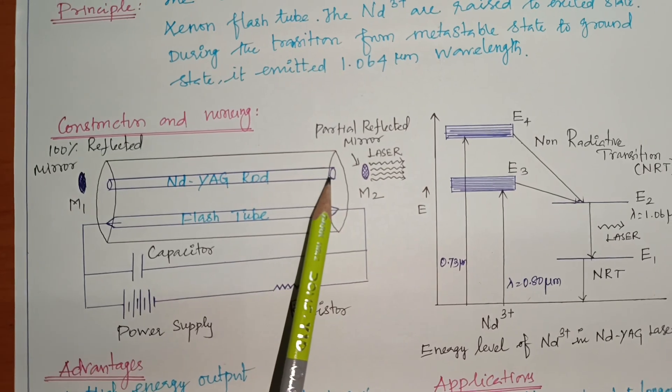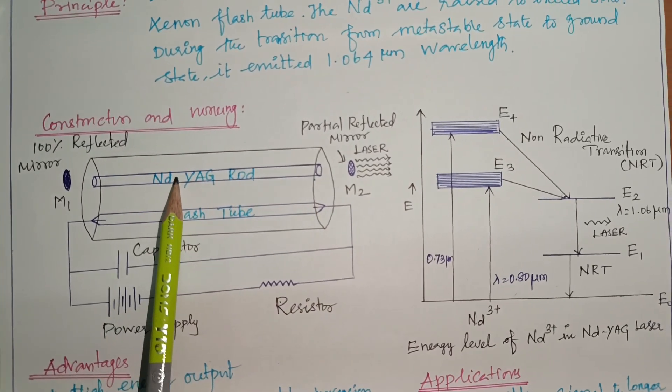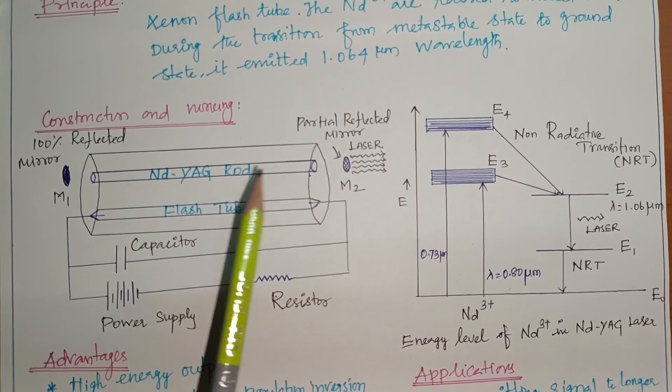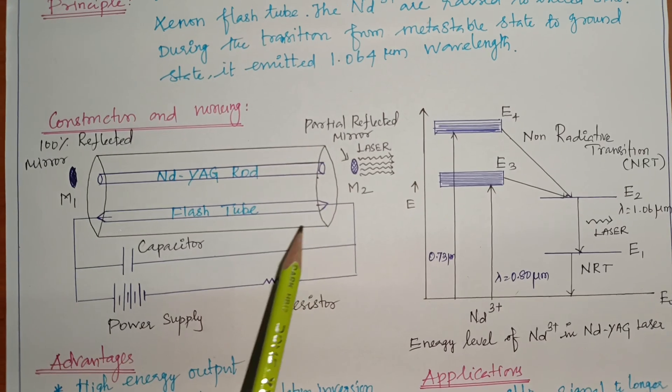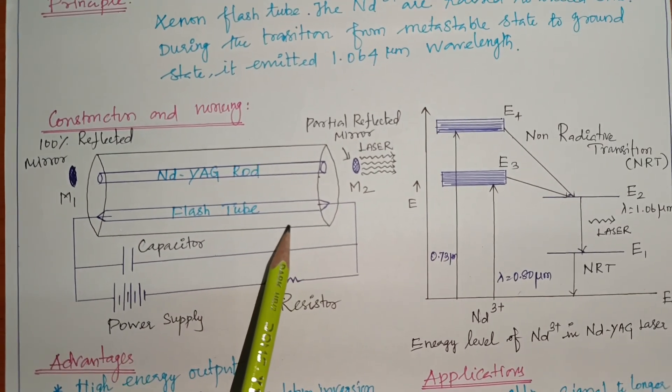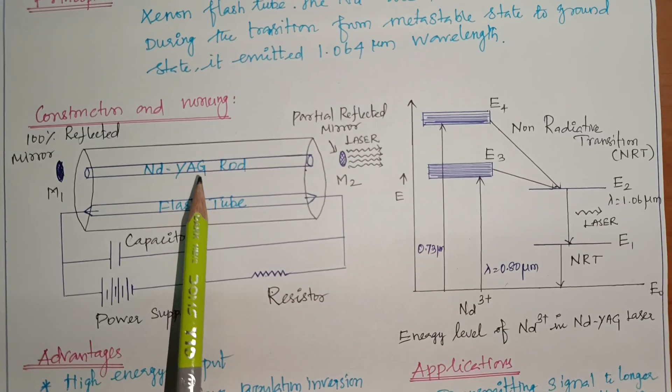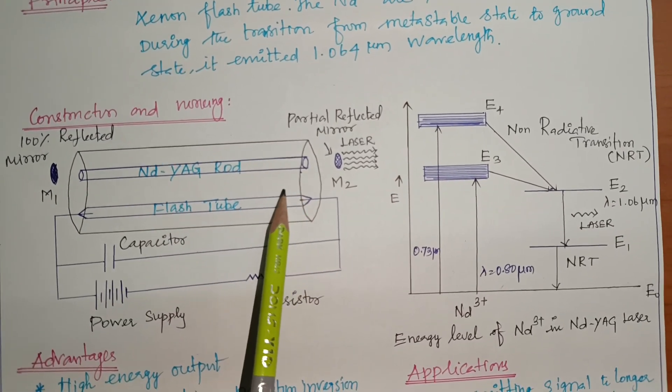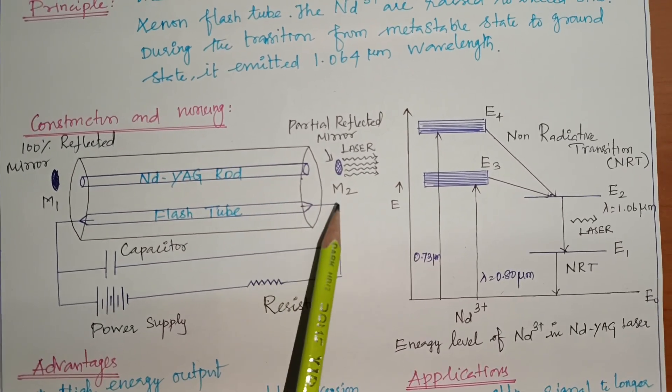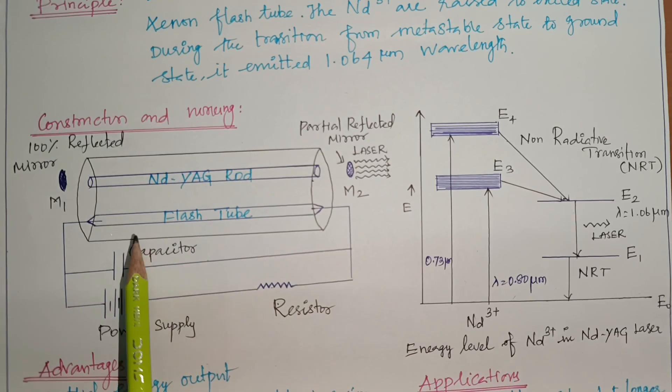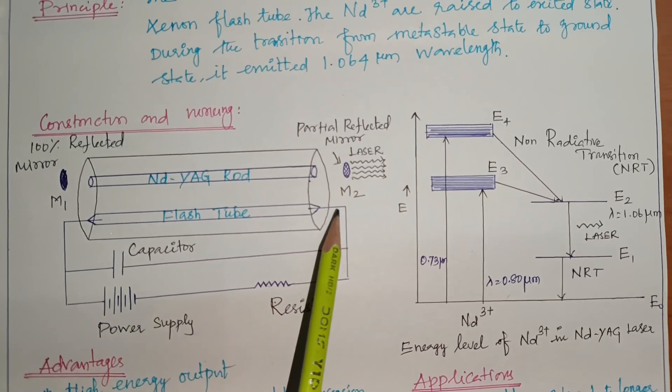So these are the major components. So here the Nd:YAG rod, flash lamp. This is an elliptical cavity. We have a resonator. So why are we going to do this? The energy has a laser action here. The laser energy will emit. We have an elliptical cavity.